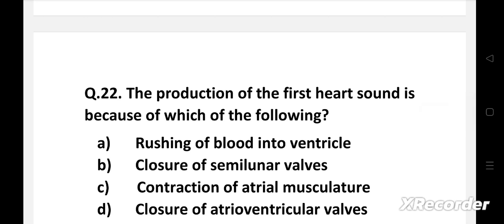Next question. The production of the first heart sound is because of which of the following - option A: rushing of blood into ventricle, B: closure of semilunar valves, C: contraction of atrial musculature, D: closure of atrioventricular valves.